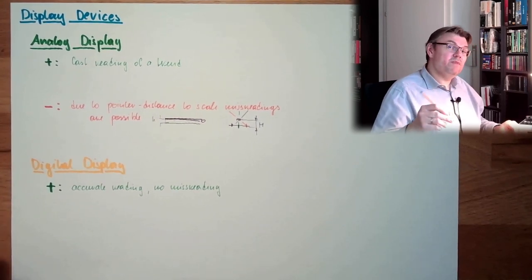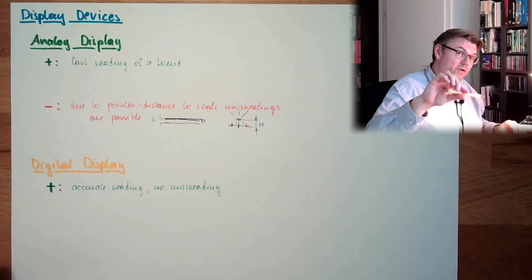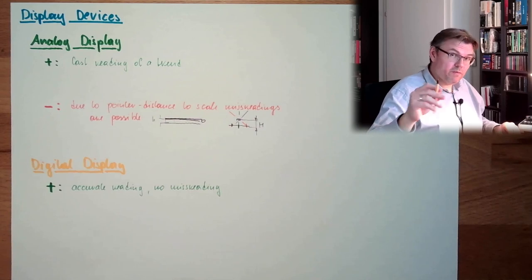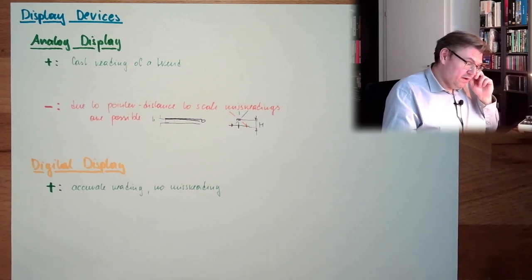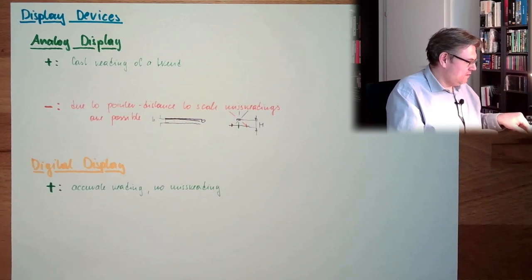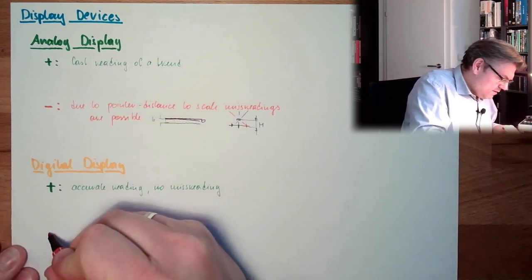I can even estimate if it's growing fast, because the pointer is moving fast, or if it's growing slow and the pointer is crawling. But it's crawling, it's moving. Here, I cannot really estimate. Here, the downside of this, I can just see changing numbers.